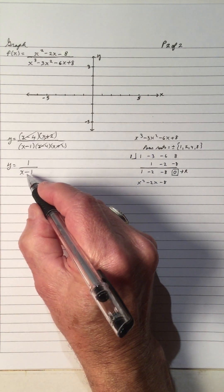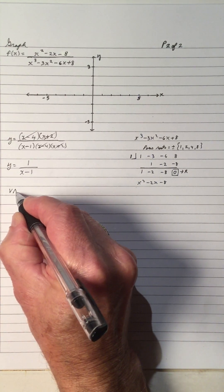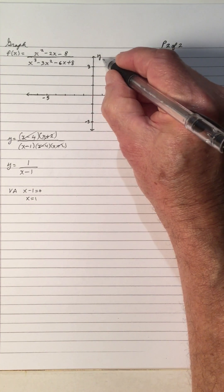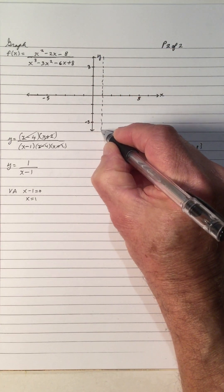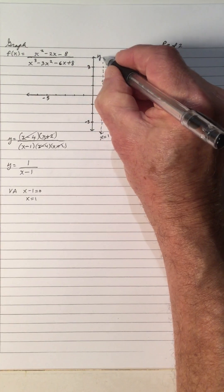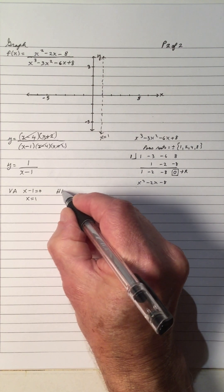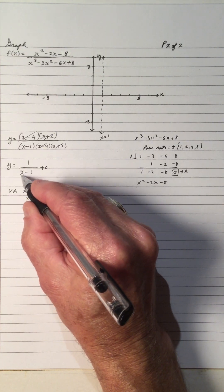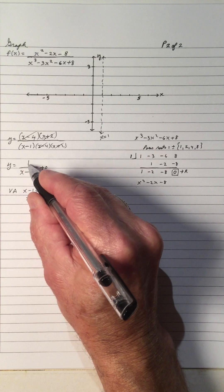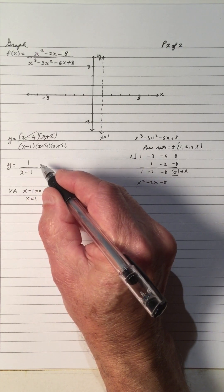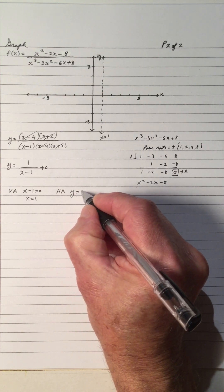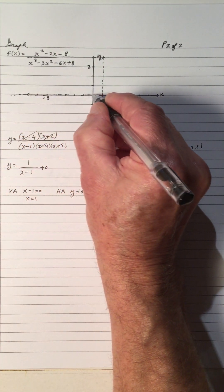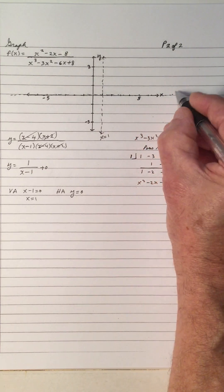That means I have a vertical asymptote. The vertical asymptote is where x minus 1 equals 0, so x equals 1. There's a vertical asymptote at x equals 1 — the graph cannot go through this. The horizontal asymptote: as x goes to infinity, x minus 1 is going to infinity, so 1 over infinity is approaching 0. That means y is approaching 0, so y equals 0 is my horizontal asymptote.